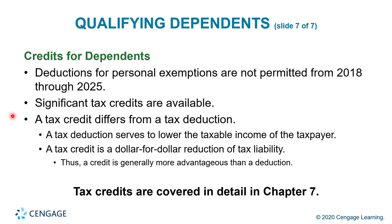Credits for dependents: deductions for personal exemptions are not permitted from 2018 through 2025 because they were suspended. However, significant tax credits are available. A tax credit differs from a tax deduction — a tax deduction serves to lower the taxpayer's taxable income, while a tax credit is a dollar-for-dollar reduction of tax liability. Thus a credit is generally more advantageous than a deduction. Tax credits are covered in detail in Chapter 7.